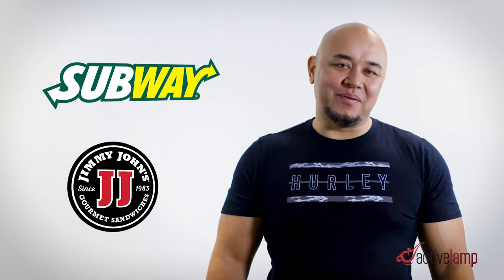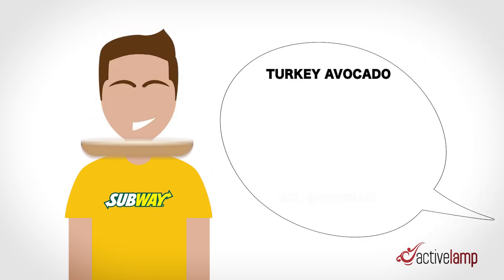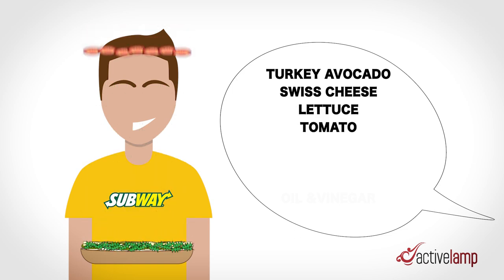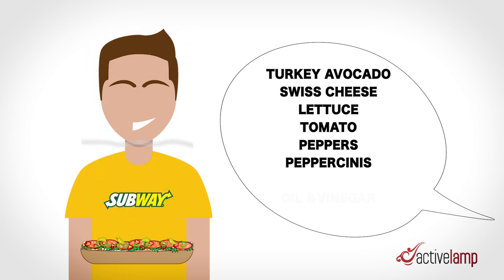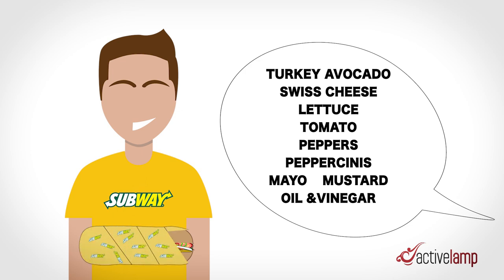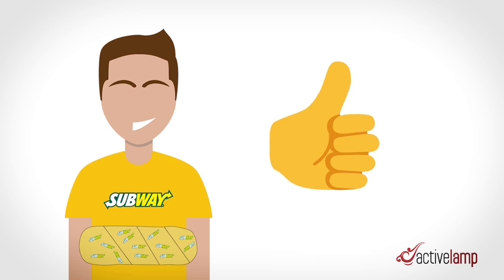I'm going to use two of my favorite places to eat to illustrate the difference: Subway and Jimmy John's. When you go to Subway to order a sandwich, you typically find a sandwich off their menu board and place an order with the sandwich maker, saying something like: I'll take a turkey avocado with Swiss cheese, lettuce, tomatoes, bell peppers, pepperoncinis, mayo, mustard, and oil and vinegar. The sandwich maker listens to all of your statements, and at the end, you get exactly the sandwich you want.